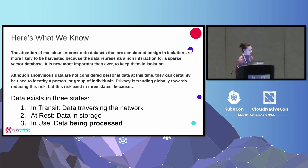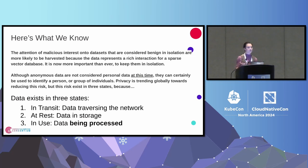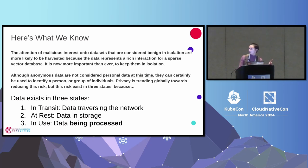Here's what we know now. The attention of malicious interest onto data sets that are considered benign in isolation are more likely to be harvested because the data now represents a rich interaction with sparse vector databases. It's now more important than ever to keep that data in isolation. We know there are regulated environments where we have known sensitive data and we are doing this work there already. There are more and growing conditions where this unicity concern makes that important. Although anonymous data are not considered personal data at this time, they can certainly be used to identify an individual, and we have to be able to protect this in three conditions: data in transit traversing over the network, data at rest in storage, and data in use — data that's being processed.